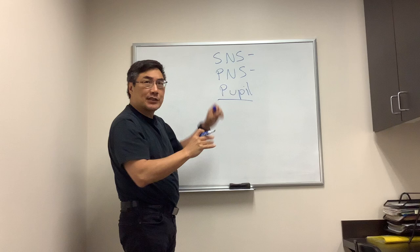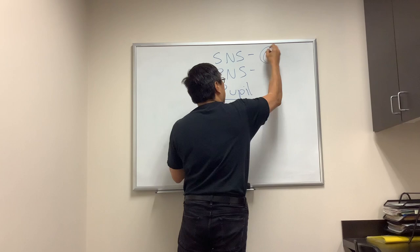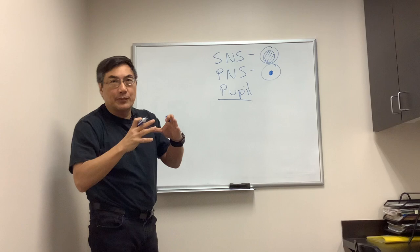The sympathetics, which is like fight or flight, which means it dilates your pupil. And the parasympathetic system, which is rest and digest, which means you don't need your pupil, so make it small.